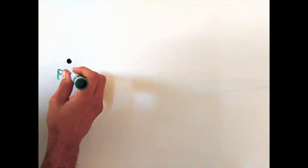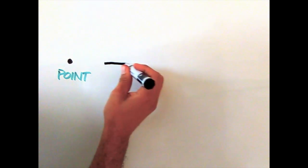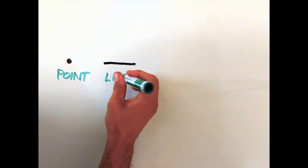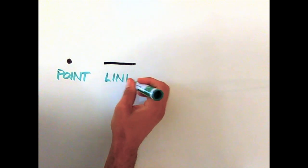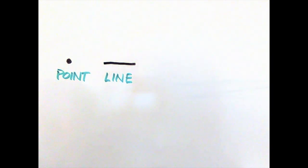Point. All movement has a zero-dimensional origin point. Line. The extension of a point is a one-dimensional line.